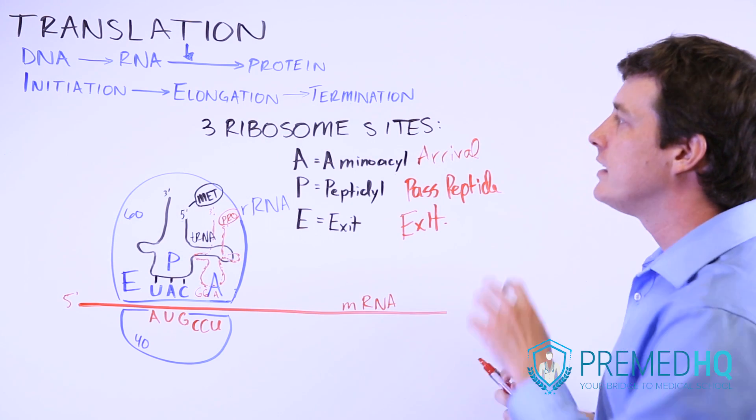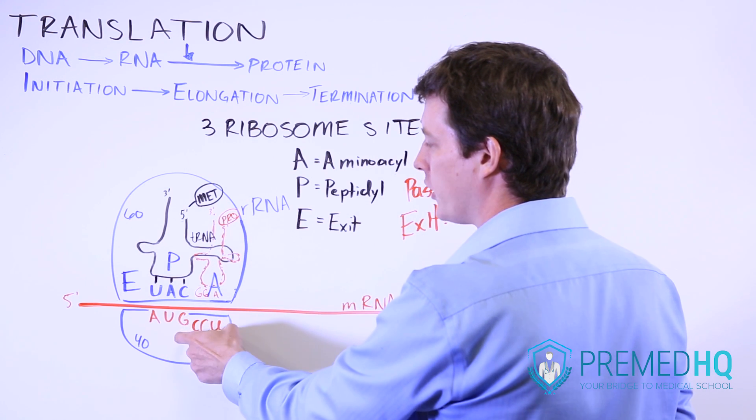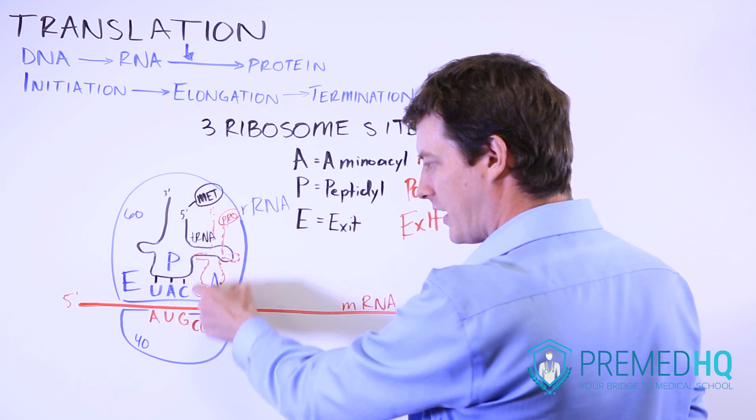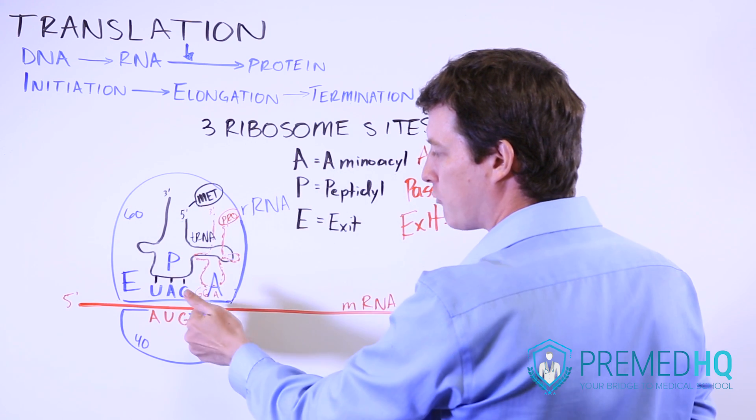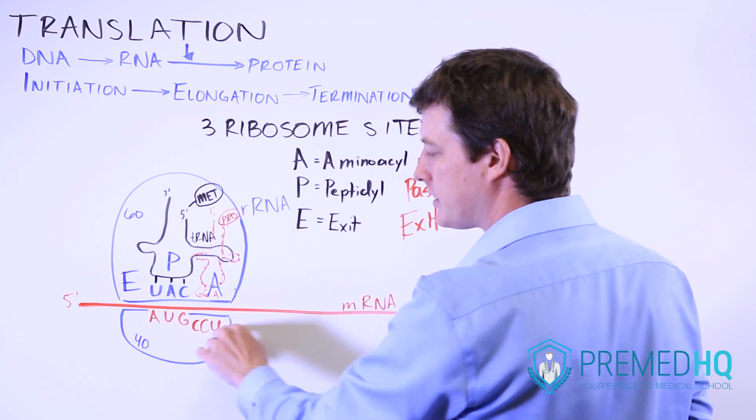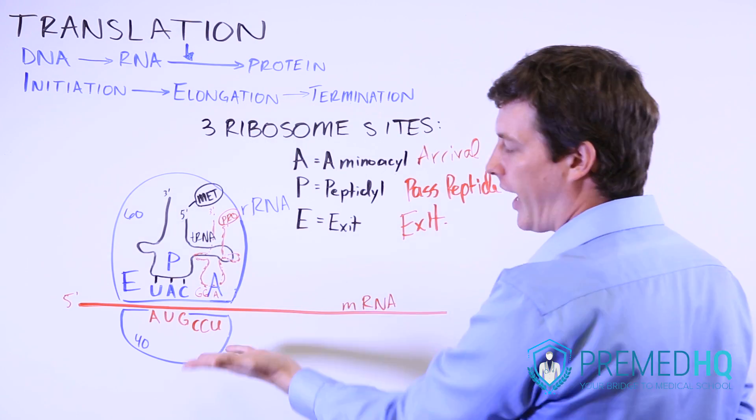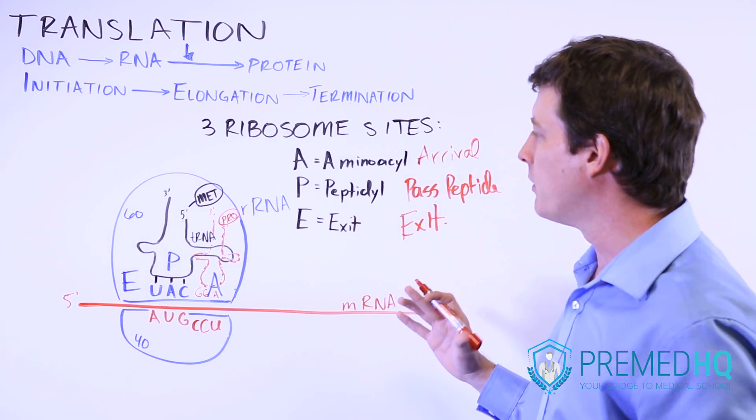And so the way the elongation process occurs is that the tRNA coding for your next codon, the codon that is found in the A site, that tRNA will arrive and it will bind. Its anticodon will bind with this codon, and this is CCU; it happens to correspond with proline, but it could be any amino acid.